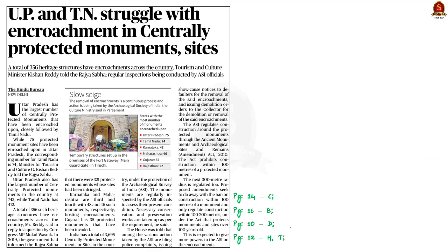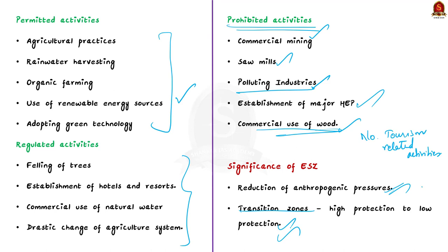Eco-sensitive zones help prevent illegal encroachment and development activities such as construction of dams or setting up industries that discharge waste into ecosystems. By regulating activities, they create a transition zone from the high-protection core area to areas of low protection like urban or rural human settlements. They also reduce human-animal conflict. These zones are declared around protected areas, with a recommended 10-kilometer buffer, and not all activities are prohibited — some are permitted, some regulated, and some prohibited.